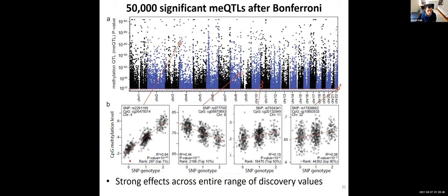We use the level of expression of a gene or the level of methylation of a CpG site as our quantitative trait. The whole basis of expression QTLs or methylation QTLs is that we look for SNPs whose number of alternate alleles (zero, one, or two) is correlated with the level of methylation or expression of a nearby gene.